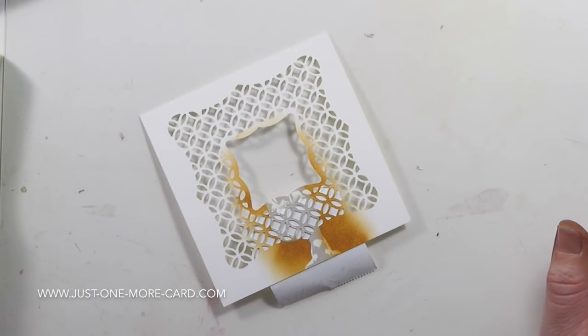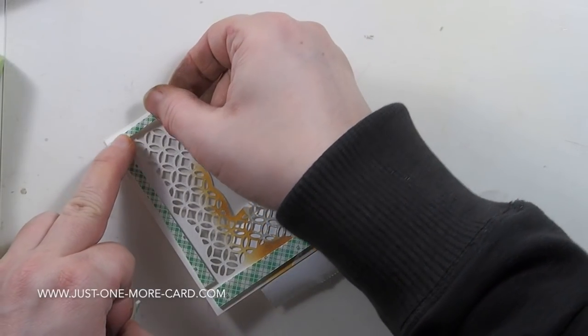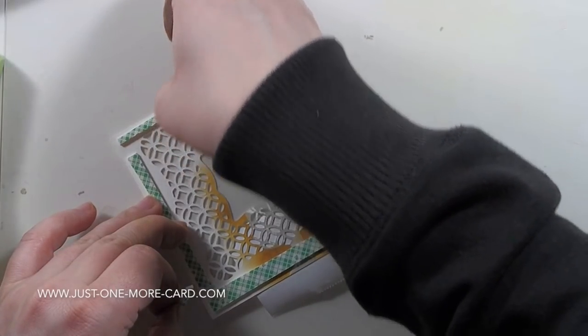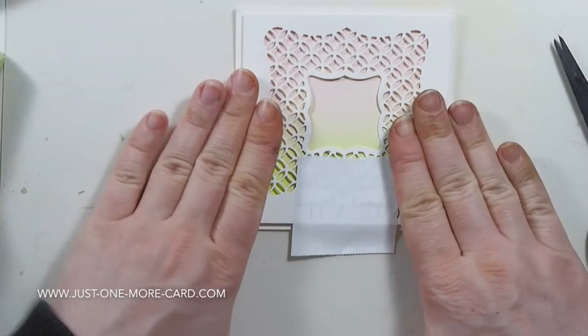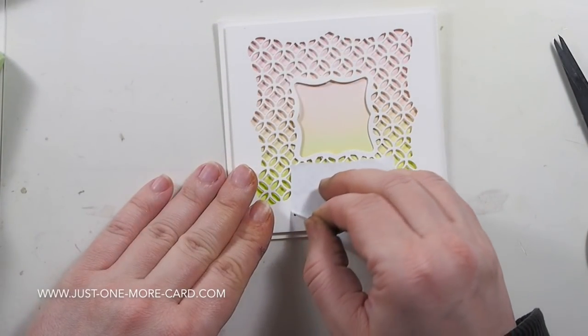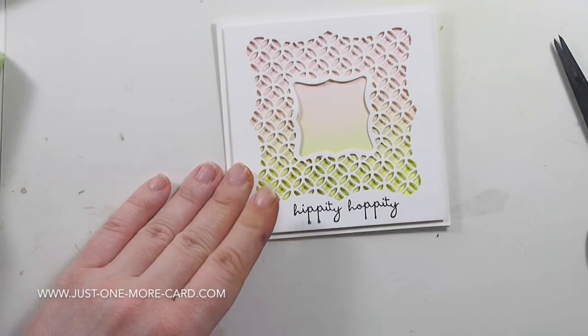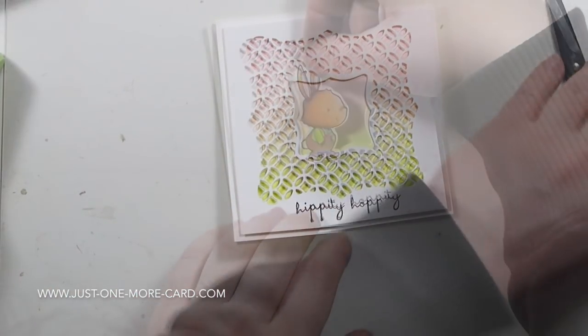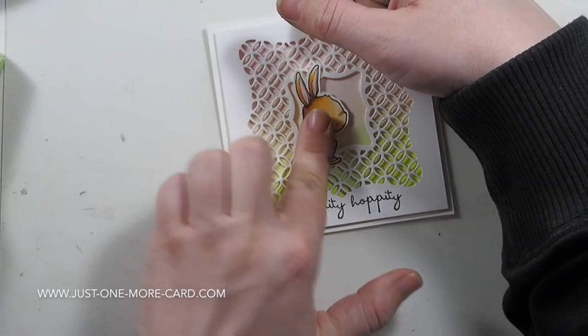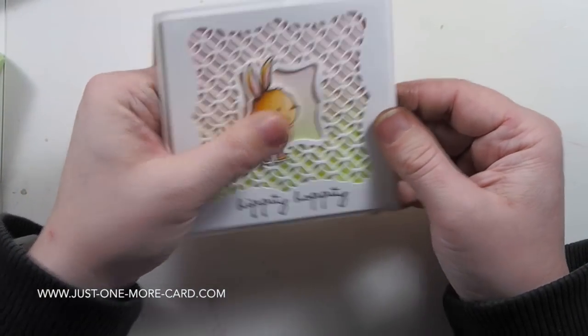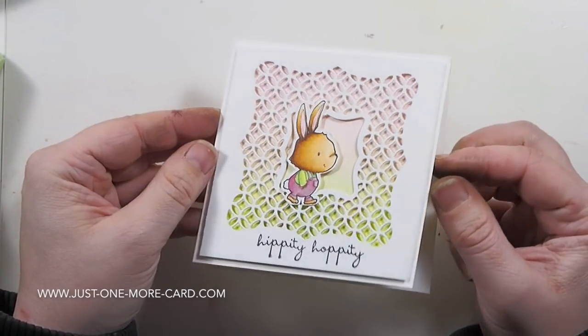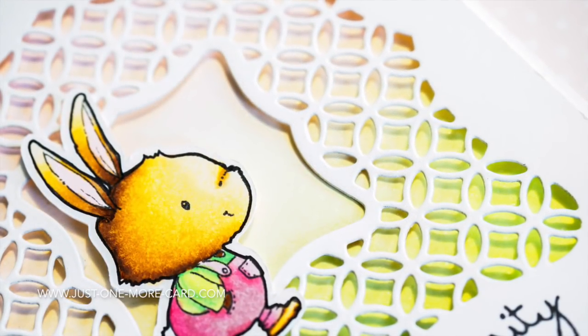Since I used VersaFine ink, which is a pigment ink that takes some time to dry, I like to cover it up with just a post-it note simply because I'm adhering foam to the back of this thing. Now I'm pressing down to adhere this to my card base, and I want to make sure that I'm not accidentally ruining the letters because the ink takes some time to dry. Now I've adhered my bunny and there we go—we have a card that is just a happy card to send to somebody.